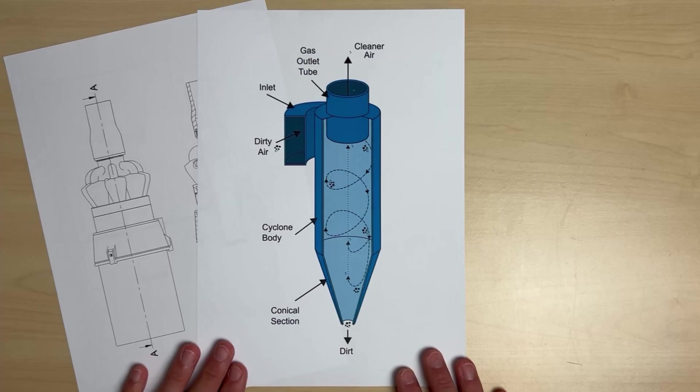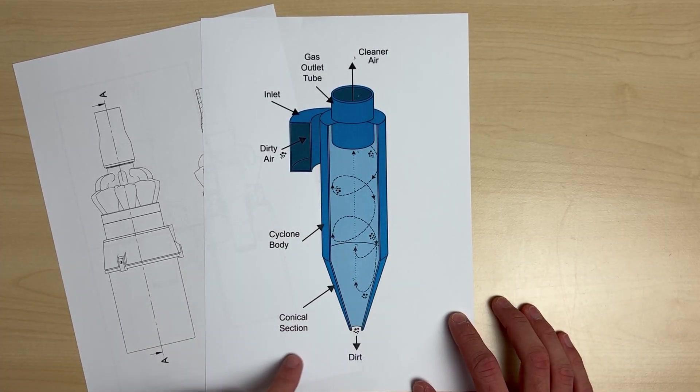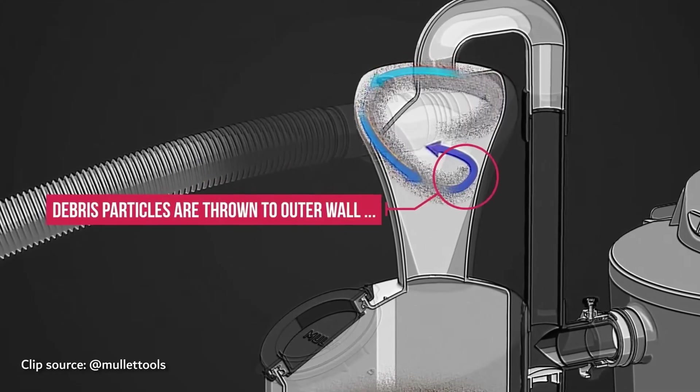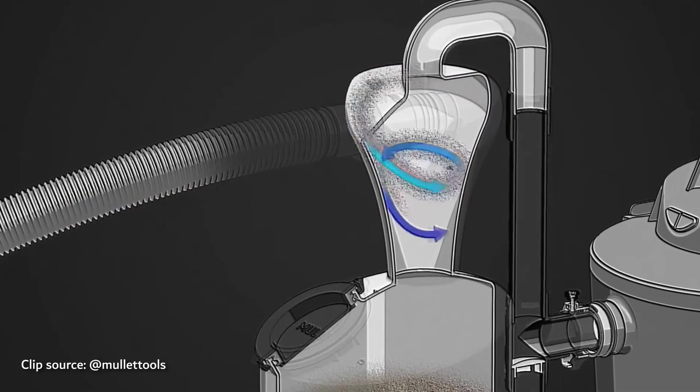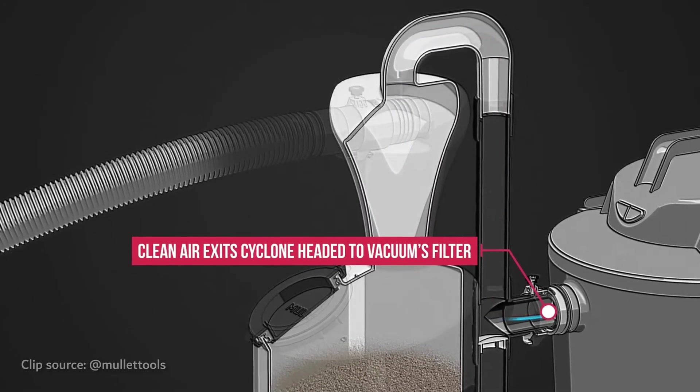A cyclone works by using a high-speed airflow and forcing it on a tangential path within a cylindrical or conical container. As the air spins, centrifugal forces push heavier particles to the outer edge of the cylinder, where they lose momentum and fall into a collection chamber. The cleaned air then exits through the top of the cyclone.